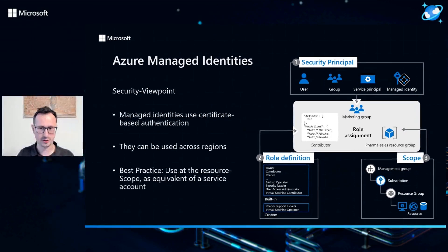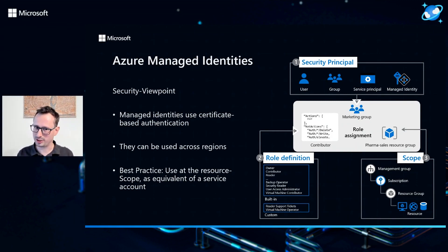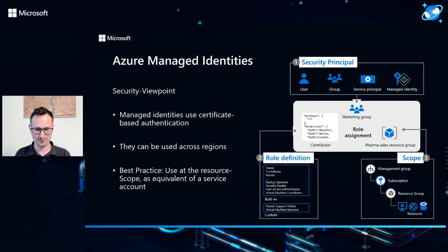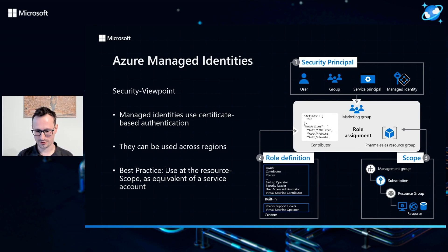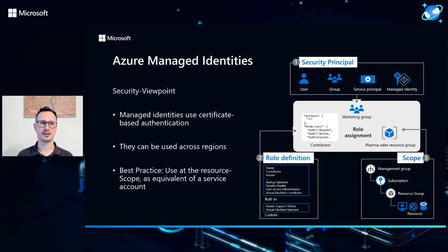If you use managed identity in an Azure context, you get the capabilities to work on the management plane — create, read, update, delete functionality — and for certain things like data actions, you get those features as well. That makes it very easy to authenticate against Azure services in the backend. The API calls generated can be used in Azure Sentinel as your SIEM tool, or any other security service, for audit logging. As a best practice, I would recommend using this on the resource scope only, equivalent to a service account.